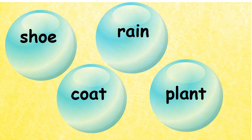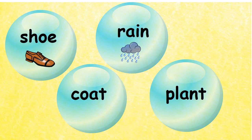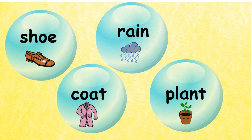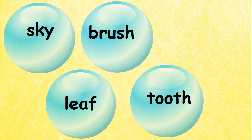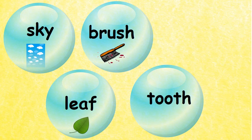Here we have shoe, rain, coat, and plant. Let's see which two words we could use to make a compound word. Look at the four words: shoe, rain, coat, and plant. The two words we would use are rain and coat — that will give you raincoat.